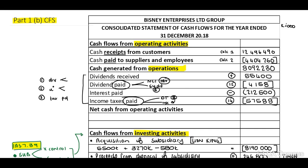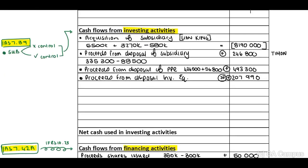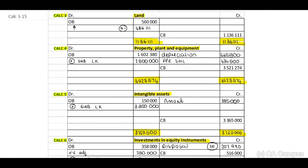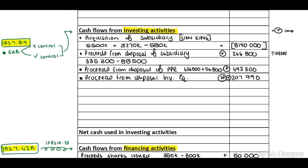Now let's move on. We need to complete our cash flows from investing activities. To do this, we need to refer to all of our T-accounts in terms of our investing activities, complete the T-accounts, and transfer any possible acquisitions. Let's work through our T-accounts - calculation 3, our land. When you calculate this, you will identify that there's a balancing figure on the debit side of $90,000. Therefore, back to basics - if your asset debits, it's an increase, credit bank. Therefore, this is an acquisition of land - transfer to the face of your cash flow statement as acquisitions of land, calculation 3, an outflow of cash of $90,000.